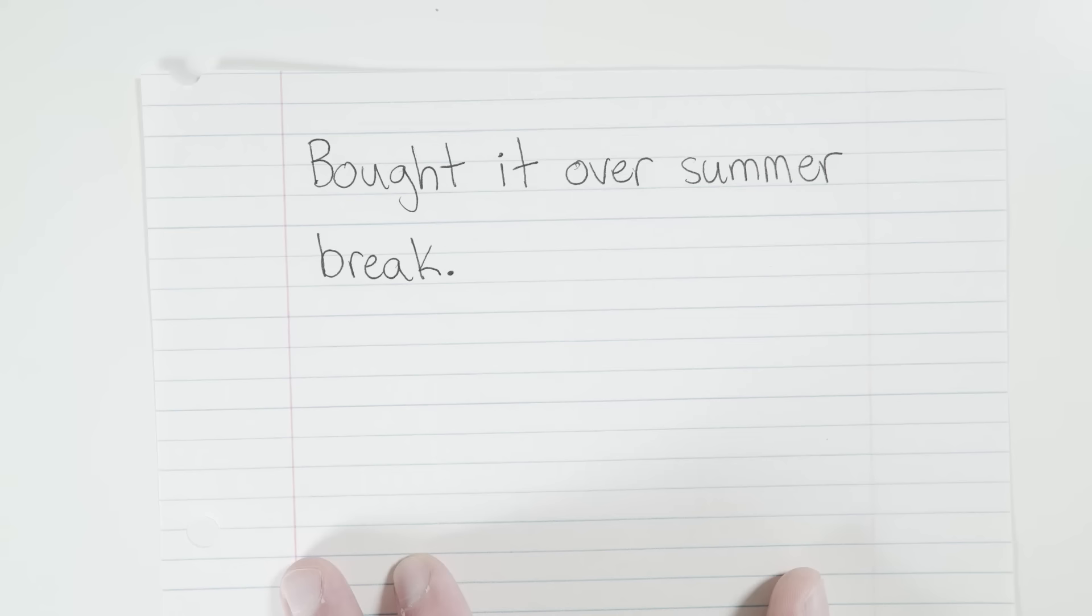Bought it over summer break. Okay, what do you think here? Well, do I have a subject? Do I know who or what I'm talking about? No, actually, I don't. And since I don't have a subject, which is an essential part of a sentence, I already know that this is not a complete sentence. Instead, it is a fragment.